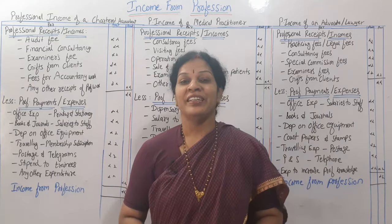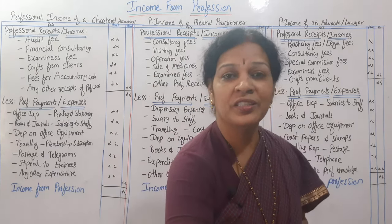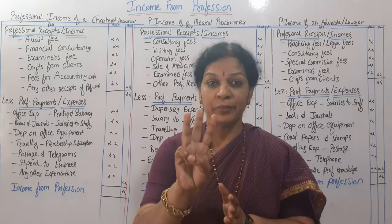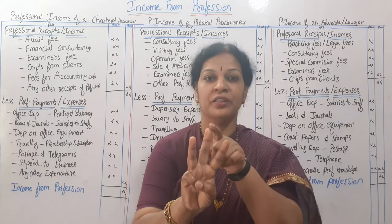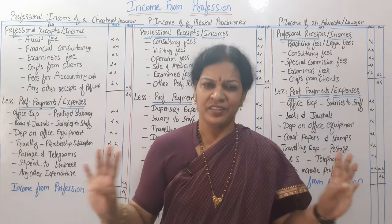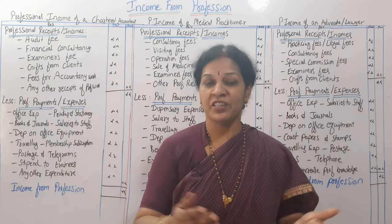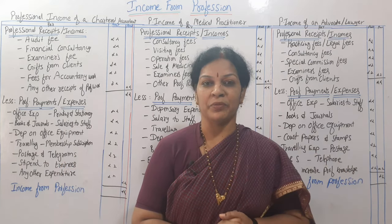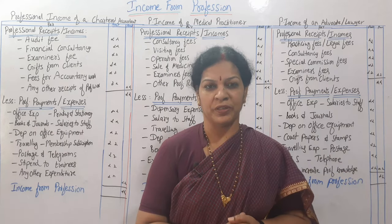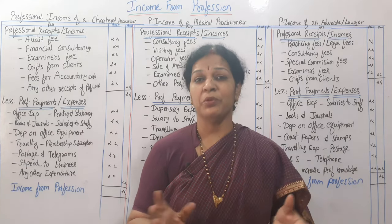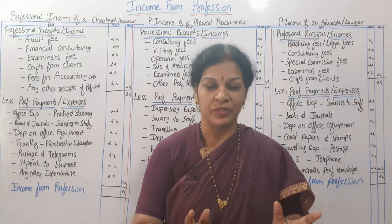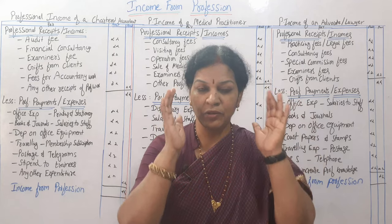So this is the proforma of professional income from three professions: chartered accountant, medical practitioner or doctor, and lawyer or advocate. Simple and easy to remember. In the next class we'll work out two or three practical problems so that we can wind up this fourth chapter.